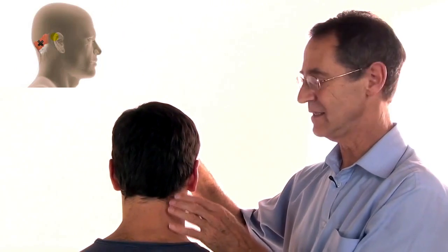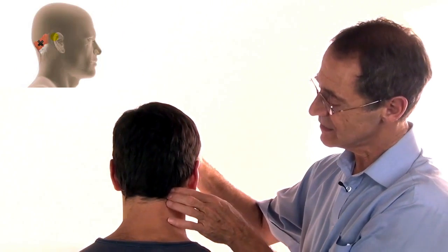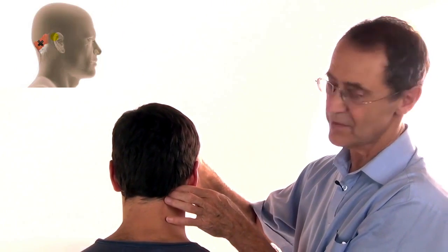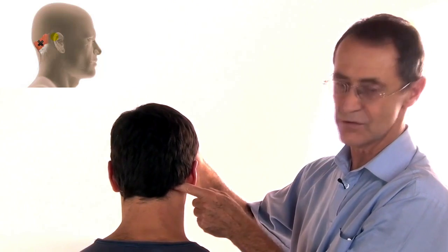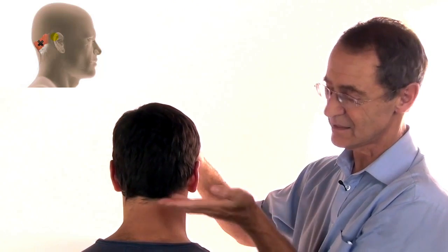The way that you find the occipitalis is that you run your hand up the neck until you hit the nuchal ridge, which is like a little shelf of bone.